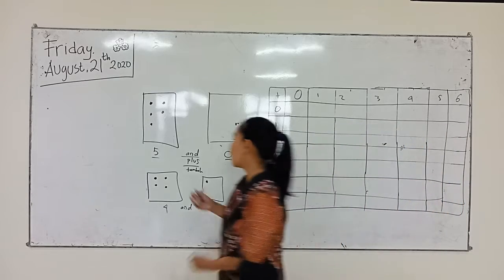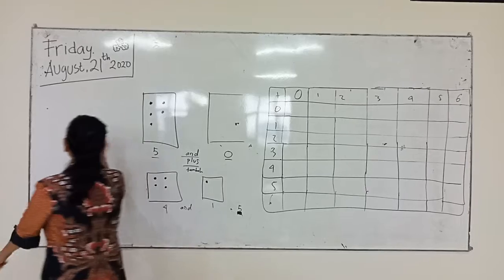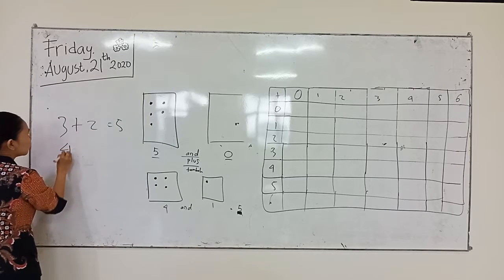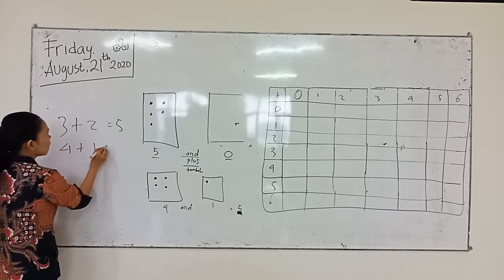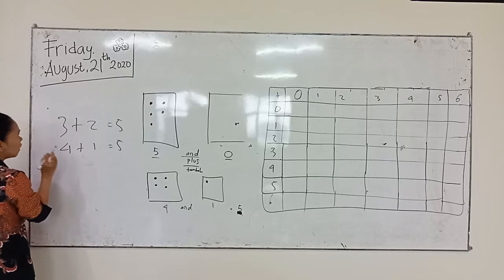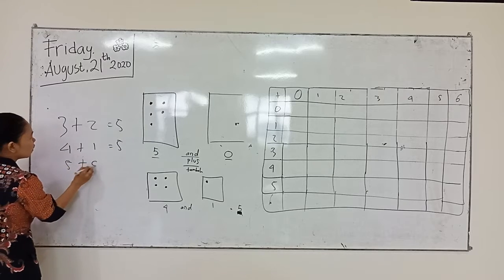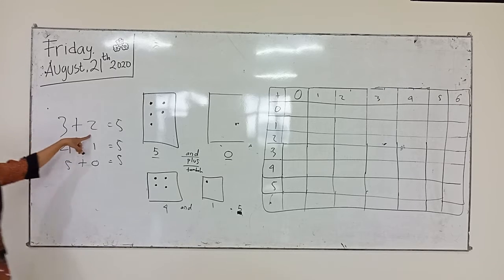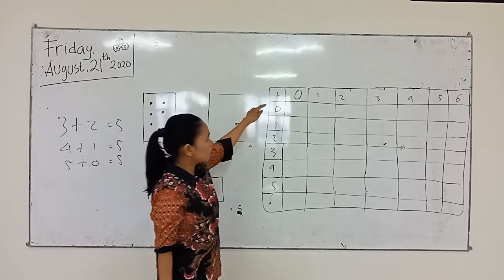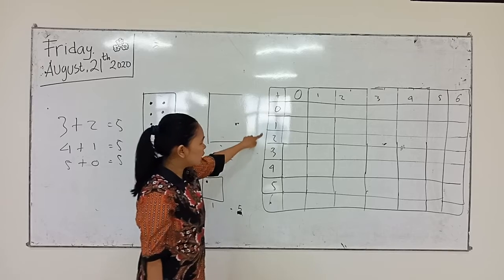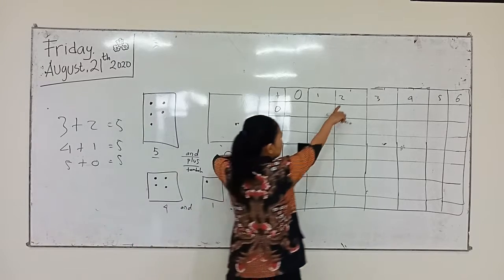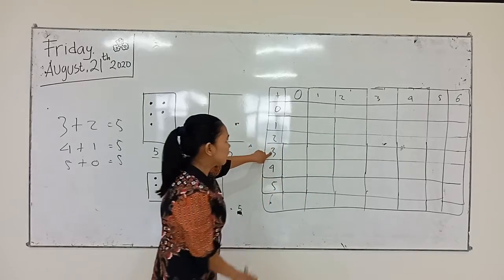Nah misalkan kita mau mencari angka lima: 3 ditambah 2 sama dengan 5, 6 ditambah 1 sama dengan 5, lalu 5 ditambah 0 sama dengan 5. Berarti kita cari 3 dan 2. That is 3 — we will draw the lines.